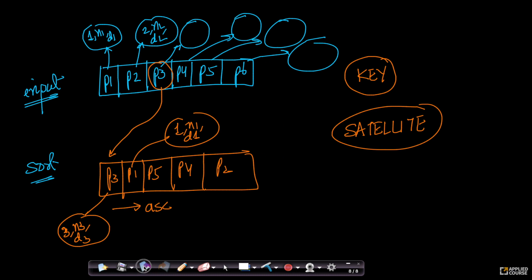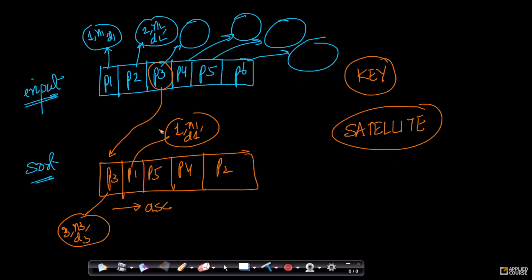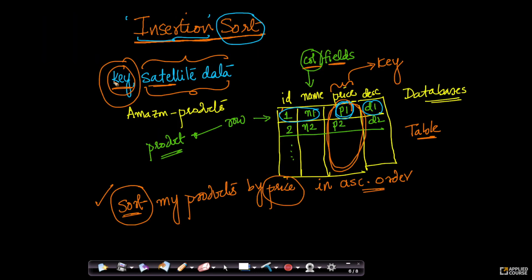This could be an array-based system or a tabular system. These two terms — key and satellite data — are important. We perform sorting using a key, but in many real-world instances there would be satellite data associated with each key that moves along with the key as keys get sorted into different orders. This is a very preliminary, simple concept of what a key is and what satellite data is. In the next few videos, we'll understand the intuition behind how insertion sort works and also look at some code.